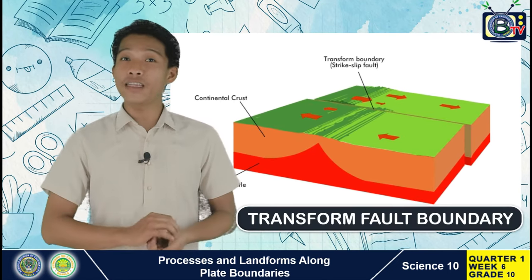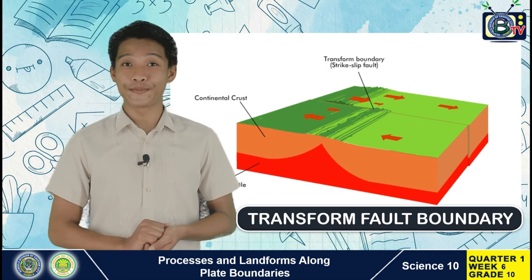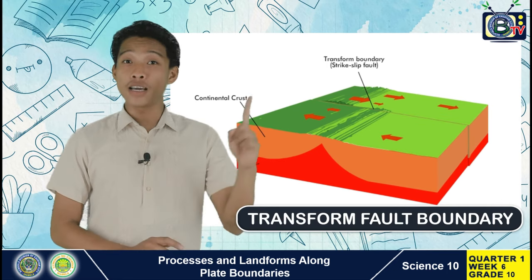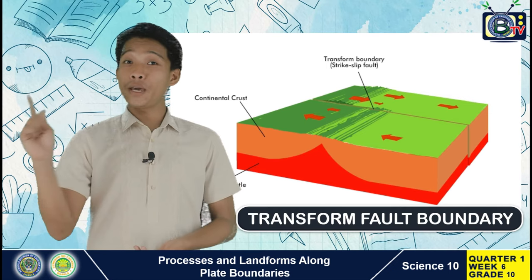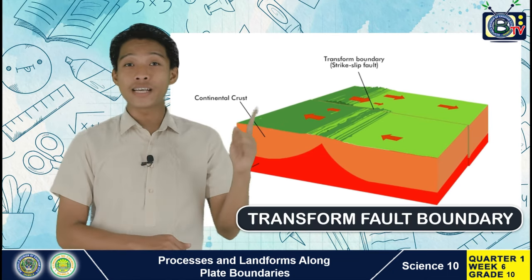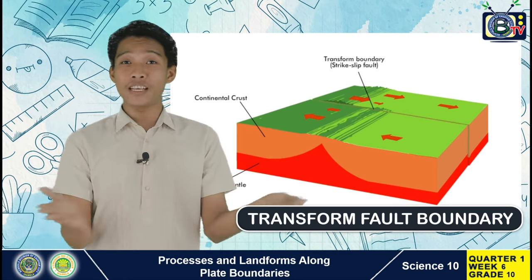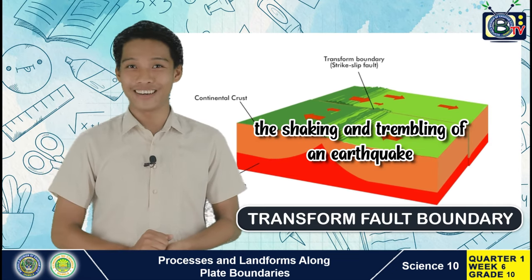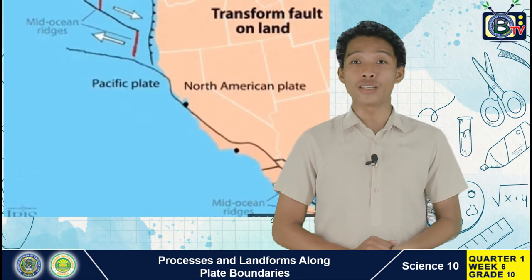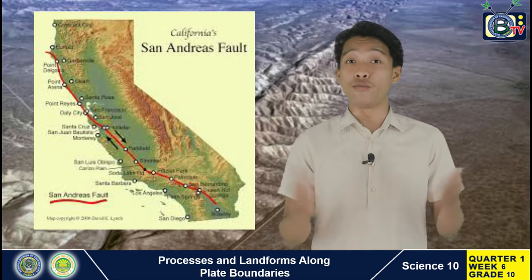Transform boundaries and the resulting force produce many earthquakes because the edges of tectonic plates are jagged rather than smooth. As the plates grind past each other, the jagged edges strike, catch, and stick, locking the plates in place for a time. Because the plates are locked together without moving, a lot of stress builds up at the fault line. This stress releases in quick bursts when the plates suddenly slip into new positions — the sudden movement is what we feel as the shaking and trembling of an earthquake. Most transform faults are located within ocean basins, but the most famous example of one that cuts through continental crust is the San Andreas fault zone of Western North America.